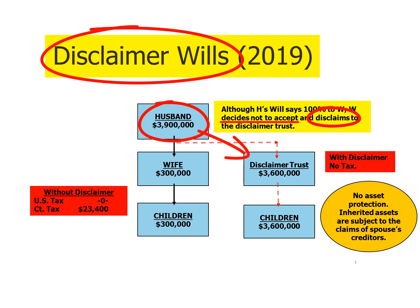She disclaims $3.6 million, and the disclaimed property moves over to a trust. The trust can be prepared in a number of ways, but typically it's drafted so that the surviving spouse receives all the income on the $3.6 million for the rest of her life. It's not unusual for the wife to have the power to withdraw up to 5% of the trust assets every year as an absolute right. She could also be a co-trustee, and at her death the trust property passes to the children.